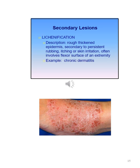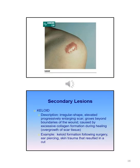Lichenification can be described as rough, thickened skin, usually the epidermis layer, secondary to persistent rubbing, itching, or skin irritation. It often involves a flexor surface of an extremity. An example would be a chronic dermatitis reaction. A keloid is an irregular-shaped, elevated, progressively enlarging scar that grows beyond the boundaries of the wound, usually caused by excessive collagen formation during healing. Examples include keloid formation following surgery, ear piercing, or skin trauma.